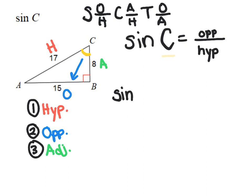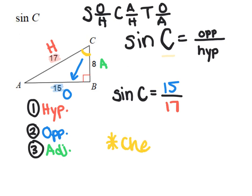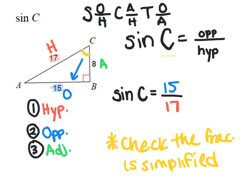So if I'm writing sine of C, the length of the opposite in this problem is 15. I'm going to put 15 over the length of the hypotenuse, which is 17. And then since it's a ratio, we want to check the fraction is simplified. Since I can't simplify the fraction 15 over 17 anymore, my final answer is that sine of C equals 15 over 17.